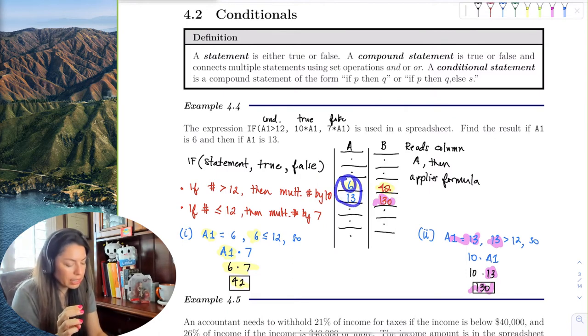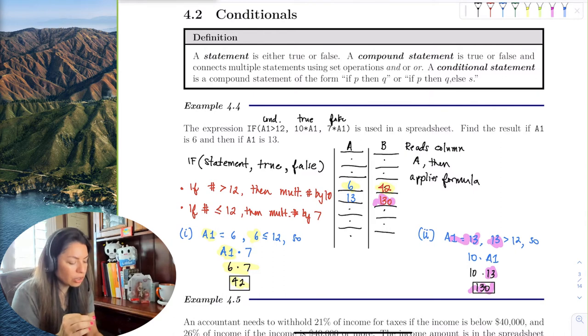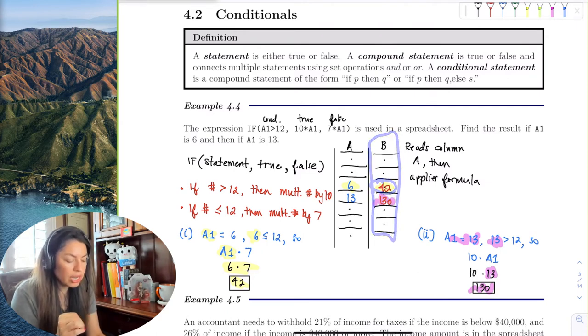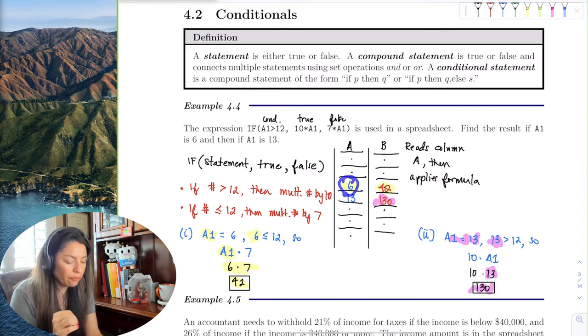So if you just wrote in column B this formula, it analyzes that cell next to it, takes this number 6, knows that this is not true (it's false), so I'm going to multiply 6 by 7 to get 42.